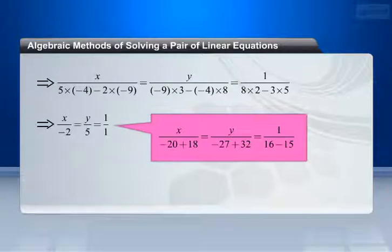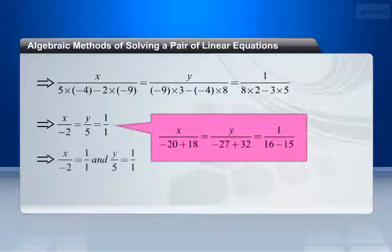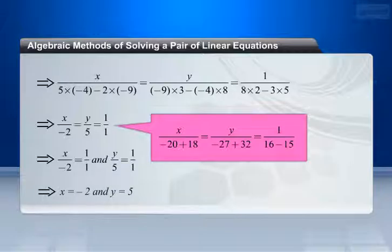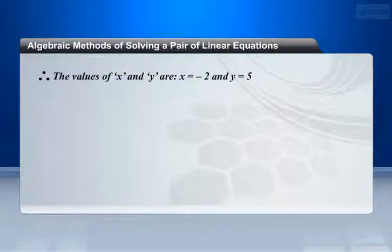This implies x divided by (minus 20 plus 18) equals y divided by (minus 27 plus 32) equals 1 divided by (16 minus 15). This implies x by minus 2 equals y by 5 equals 1 by 1. Therefore x equals minus 2 and y equals 5.